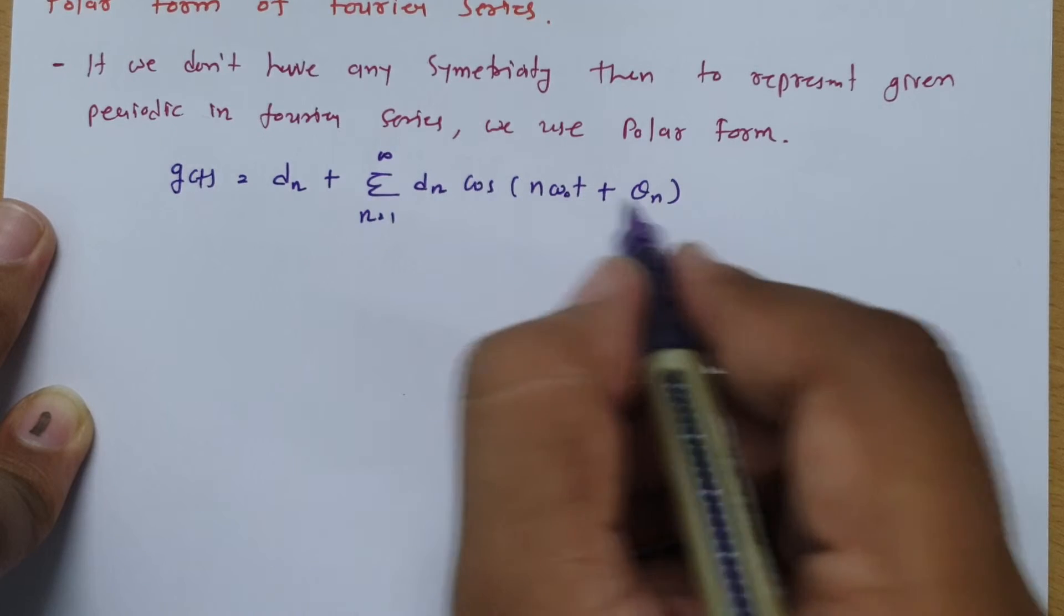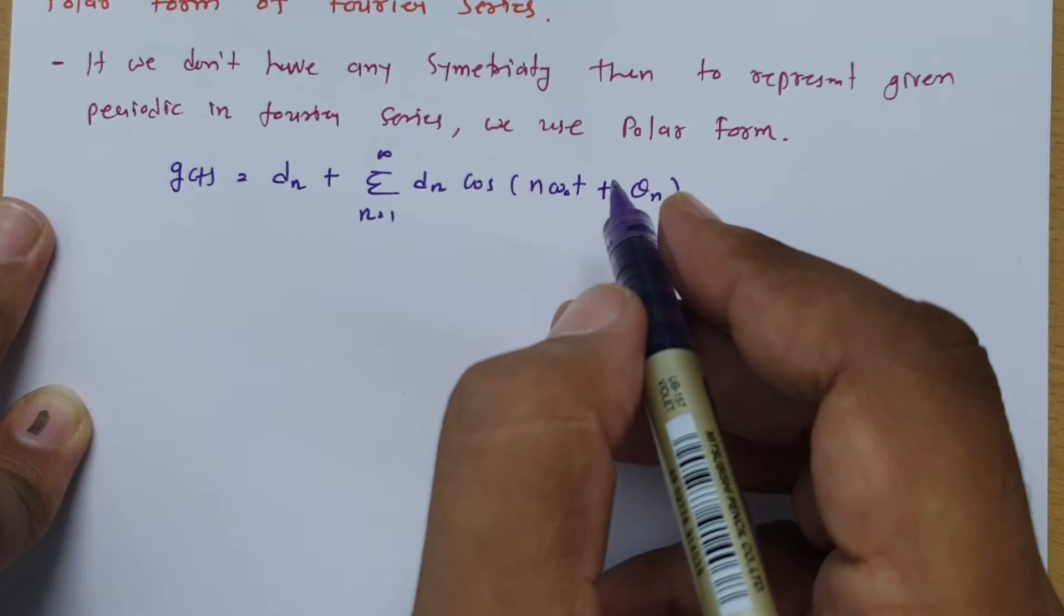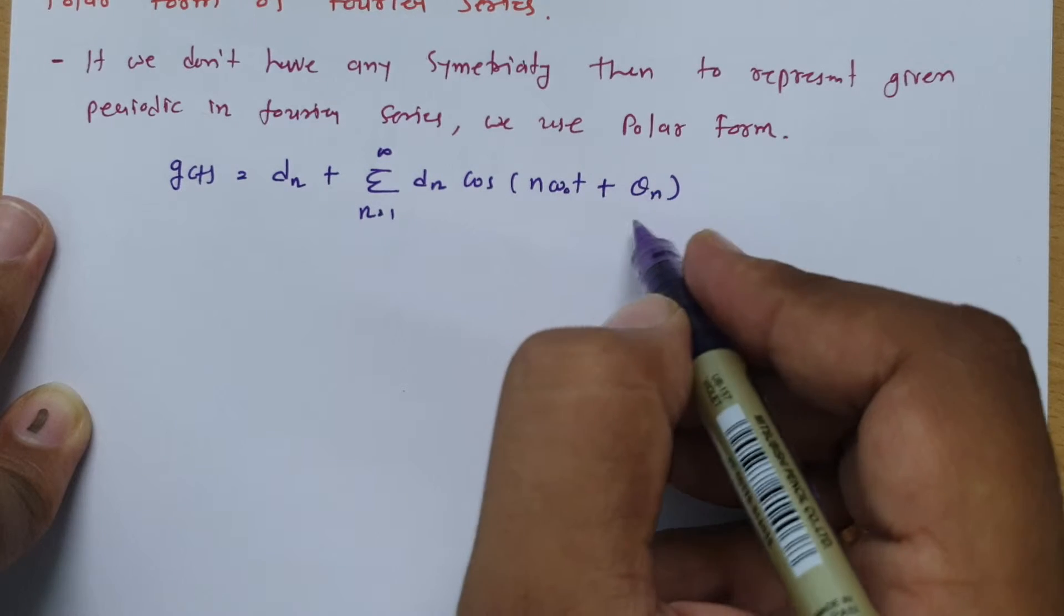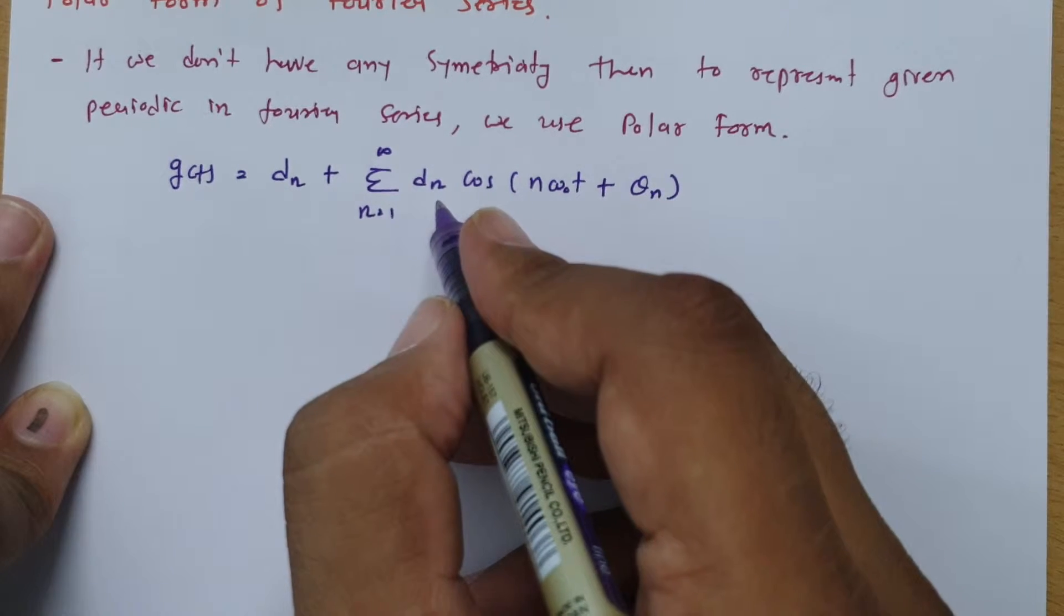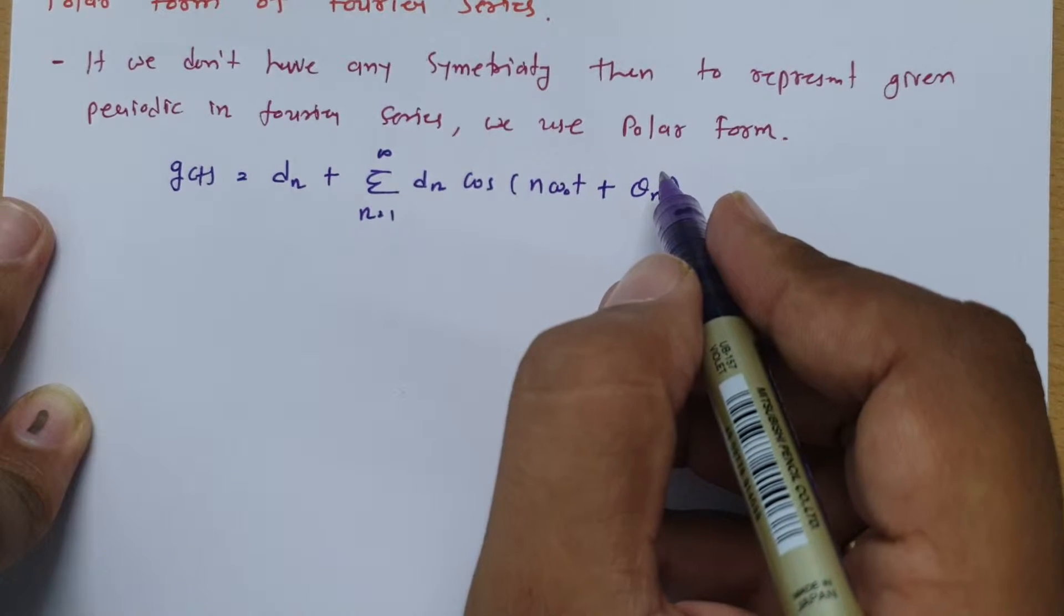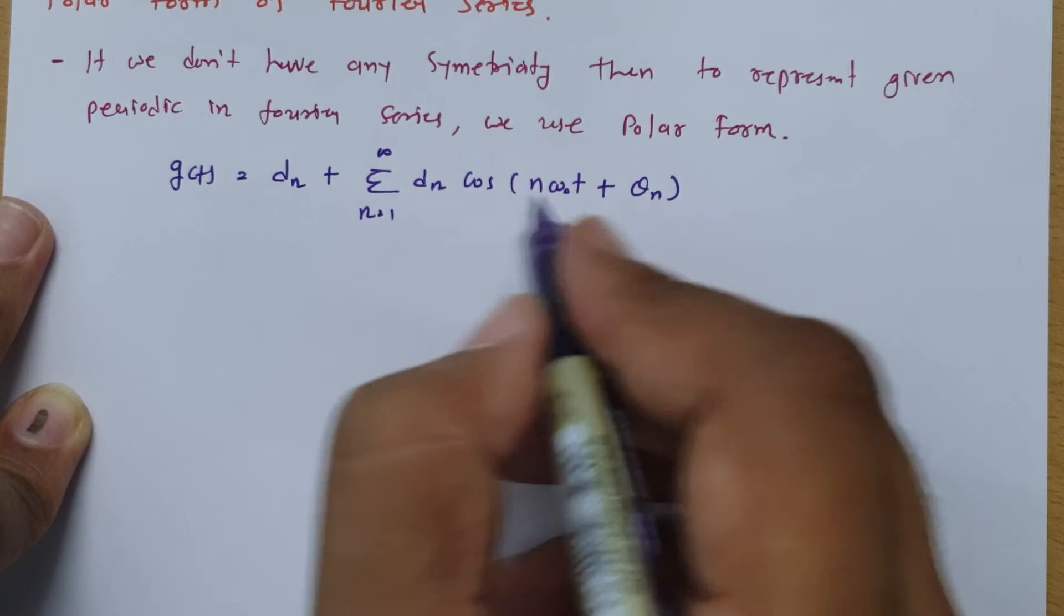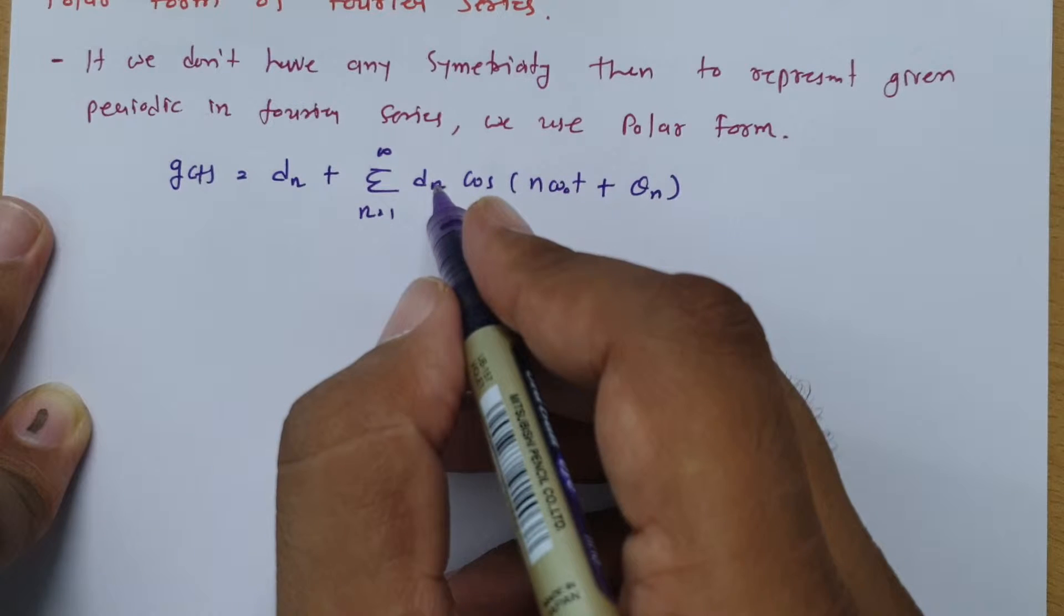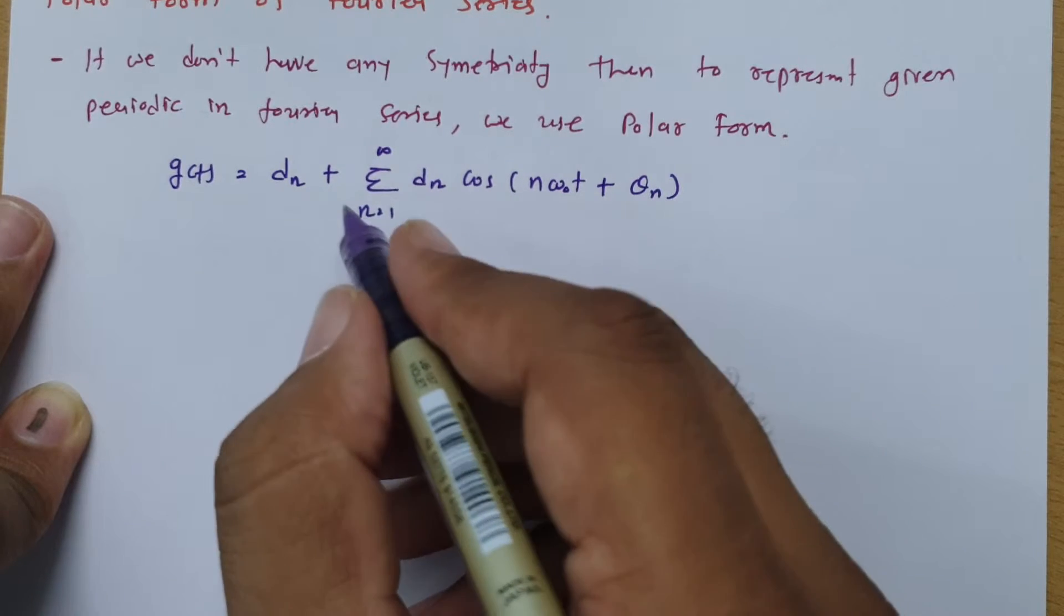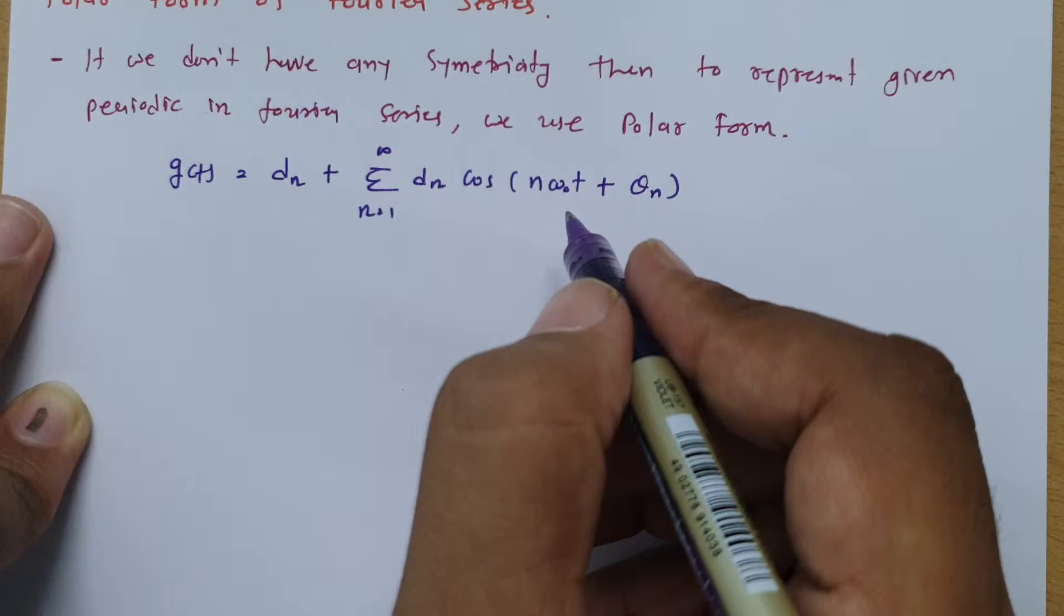Now why it is polar? Here we need to calculate magnitude dn and phase theta n. So magnitude is been represented by dn and phase is been represented by theta n and coefficients are represented by dn. So this is what the basic thing which we need to understand here.